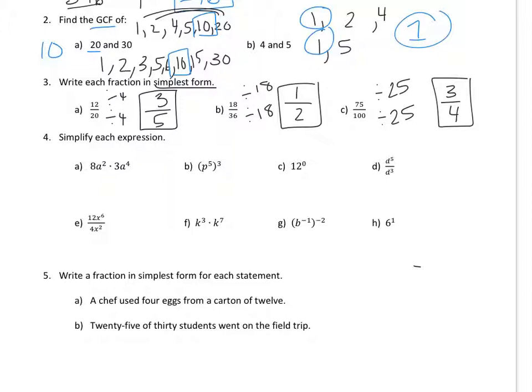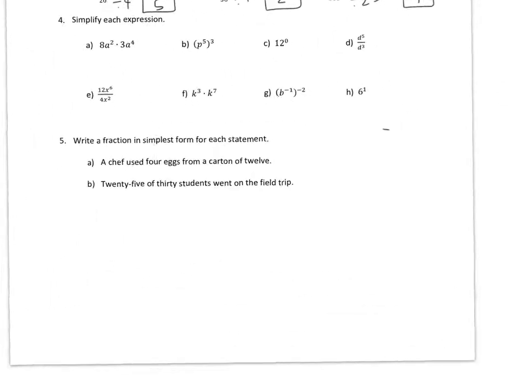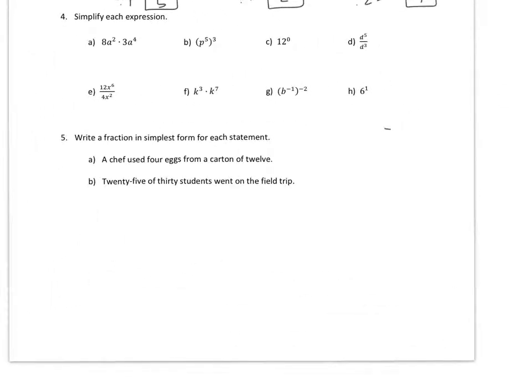Okay, number 4 is doing properties of exponents. So down here, I'm going to do some properties of exponents. So we know that any number to the zero power is 1. We know that if we are multiplying with the same base, these are both A, we're going to add the exponents.